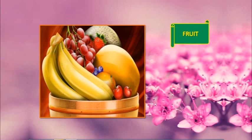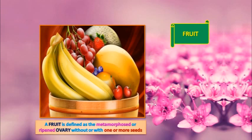What is fruit, students? Fruit is a characteristic feature of the flowering plants. It is a mature or ripened ovary which is developed after fertilization. If a fruit is formed without fertilization of the ovary, then that is known as a parthenocarpic fruit. So, fruit can be defined as a metamorphosed or ripened ovary without or with one or more seeds.